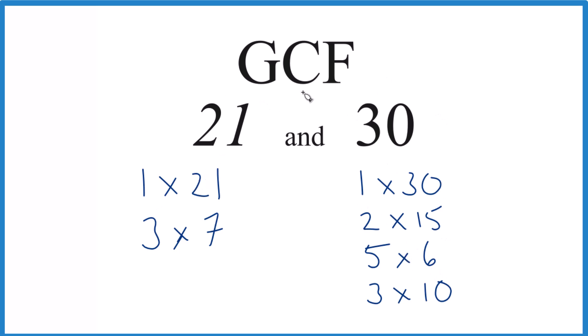We want to find the greatest common factor. So 1, that's a factor of both 21 and 30. 3, that's a factor. Actually there's no more, so 3 is the greatest common factor. That's the greatest factor that goes into 21 and 30.